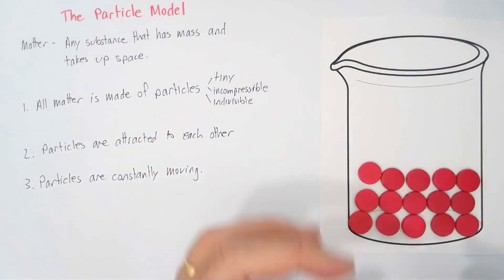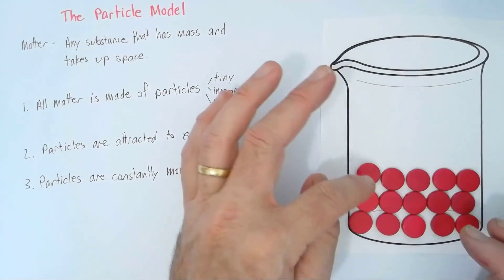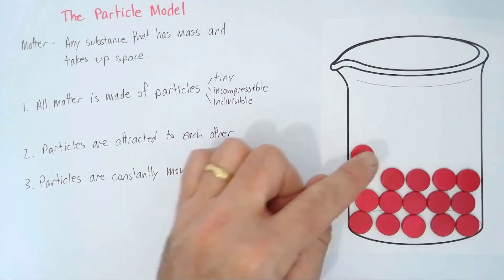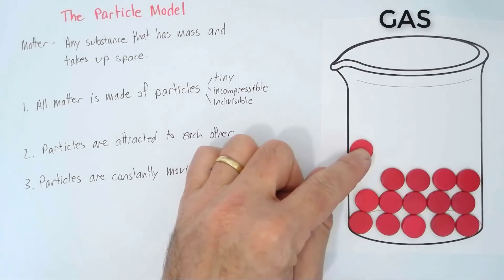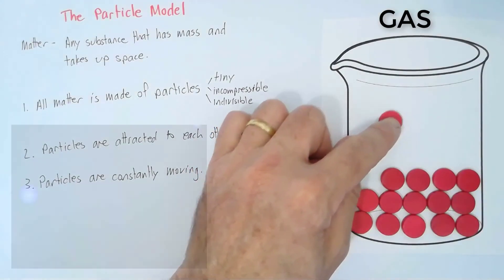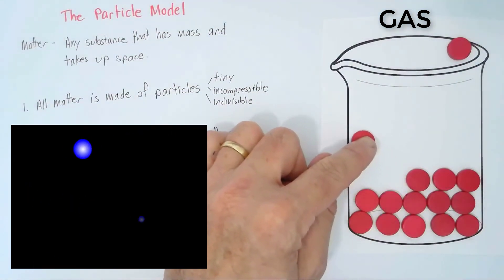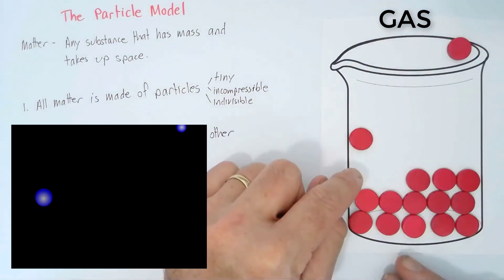If we were to add even more heat to it, then some of the particles actually break away from the liquid and form into a gas. They're going to then go up into the atmosphere. So they move in a straight line unless they actually come into contact with something.